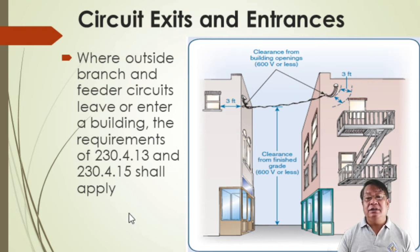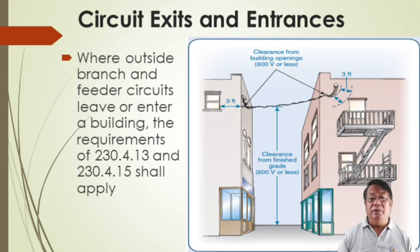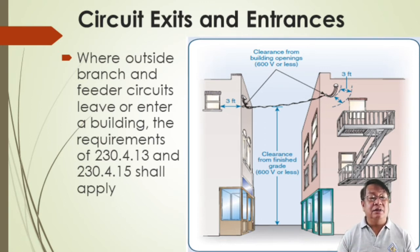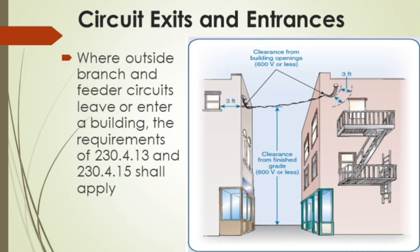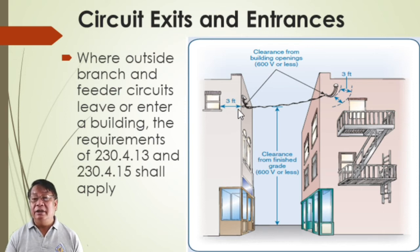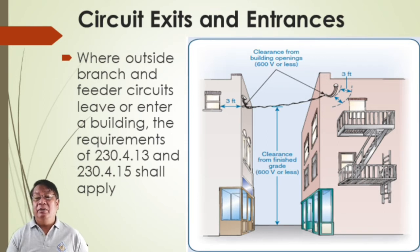For circuit exits and entrances where outside branch and feeder circuits leave or enter a building, the requirements at 230.4.13 and 230.4.15 apply. The service entrance should not be within three feet of a window or building opening — not three feet below or above, nor within that clearance.